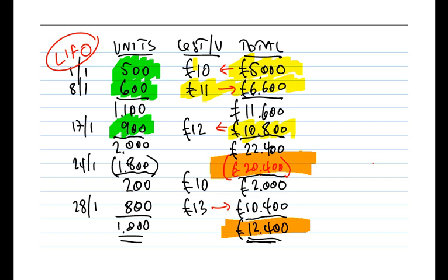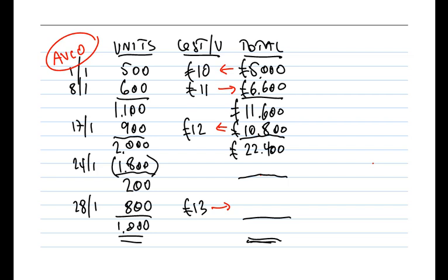We've looked at FIFO and LIFO. What about our third technique — AVCO, or average cost? Again, much is the same: 500 units at £10 per unit totalling £5,000; 600 units purchased on the 8th at £11 per unit giving £6,600; 900 units purchased on the 17th totalling £10,800. So at end of day on the 17th, we've still got 2,000 units with a total value of £22,400. When making purchases, it doesn't matter which valuation technique you're using — the difference only arises when you make issues.